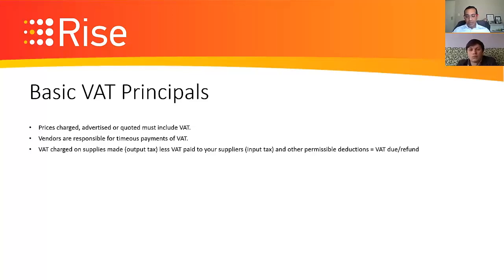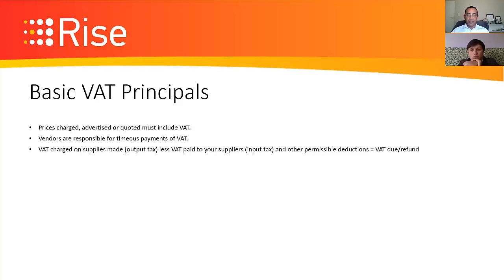For example, if you're buying R114,000 worth of VATable supplies from suppliers, R14,000 is your input VAT. If your sales are R57,000, your output tax is R7,000, and SARS will refund you R7,000. Conversely, if your sales are R114,000 and purchases R57,000, you only pay SARS R7,000 — not the full R14,000 on your invoices.